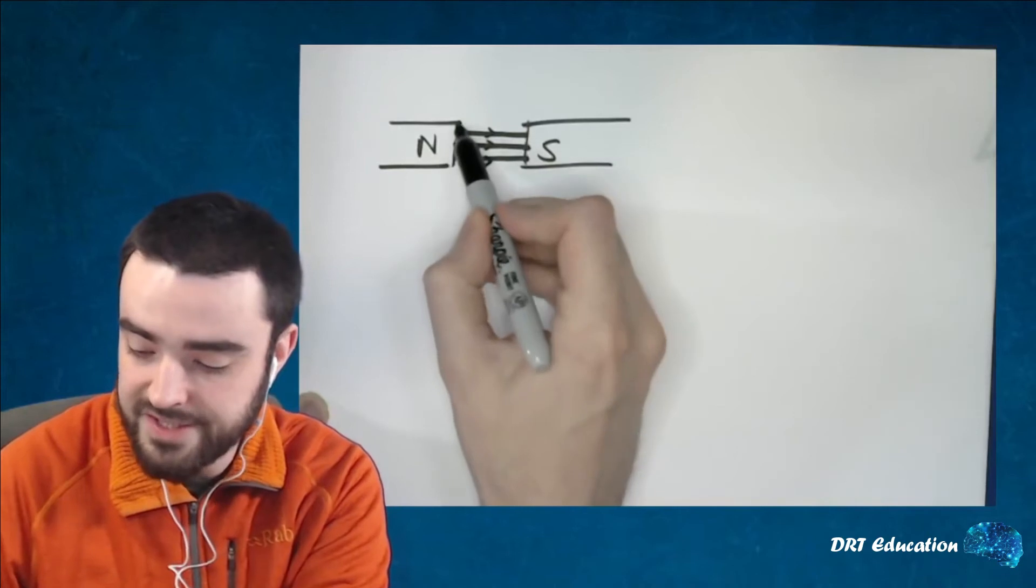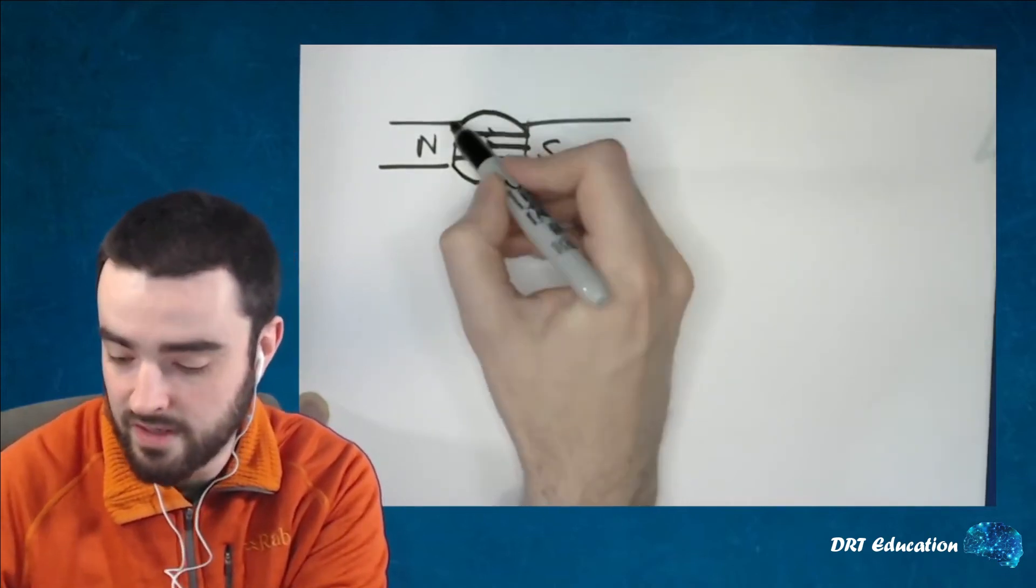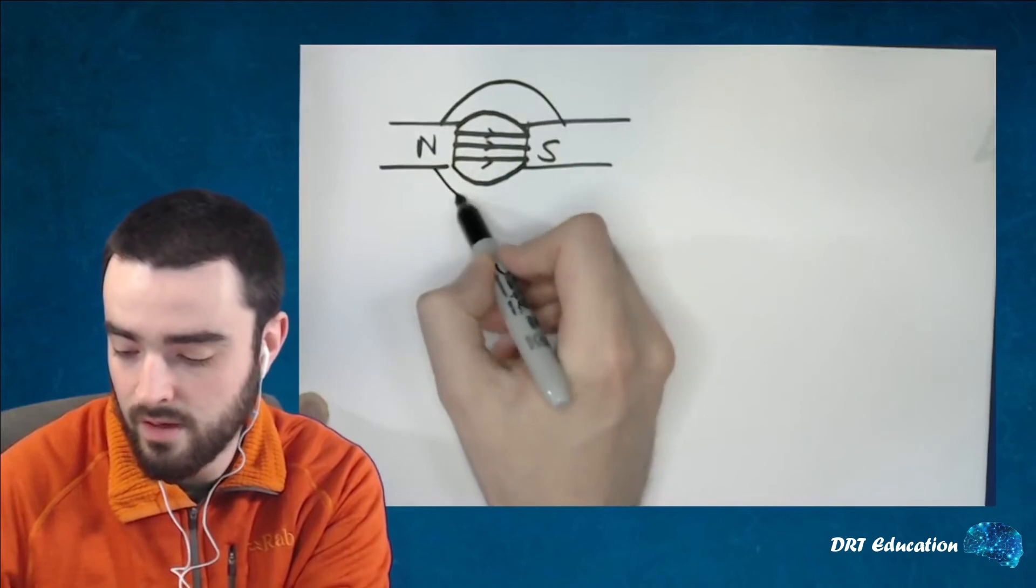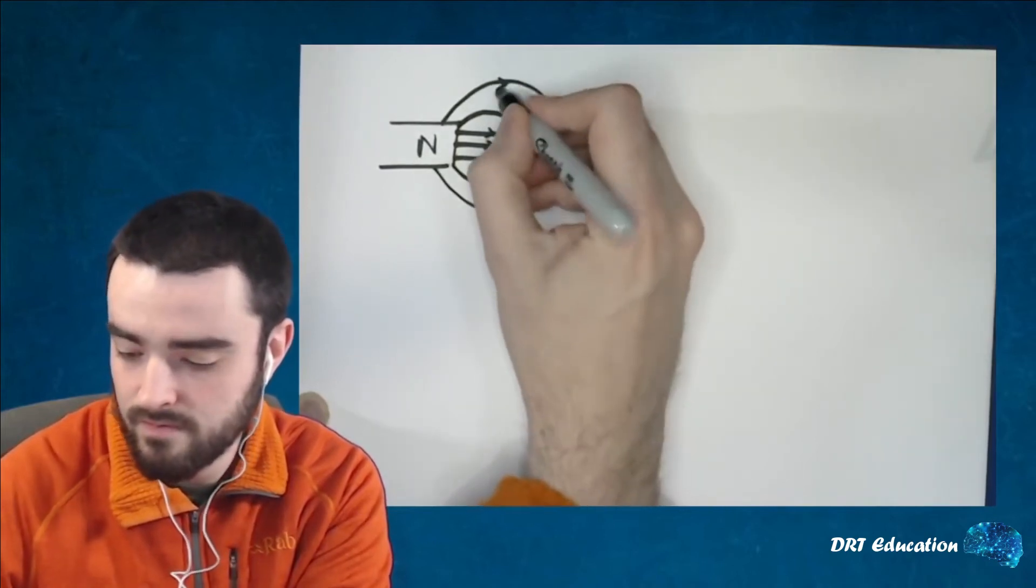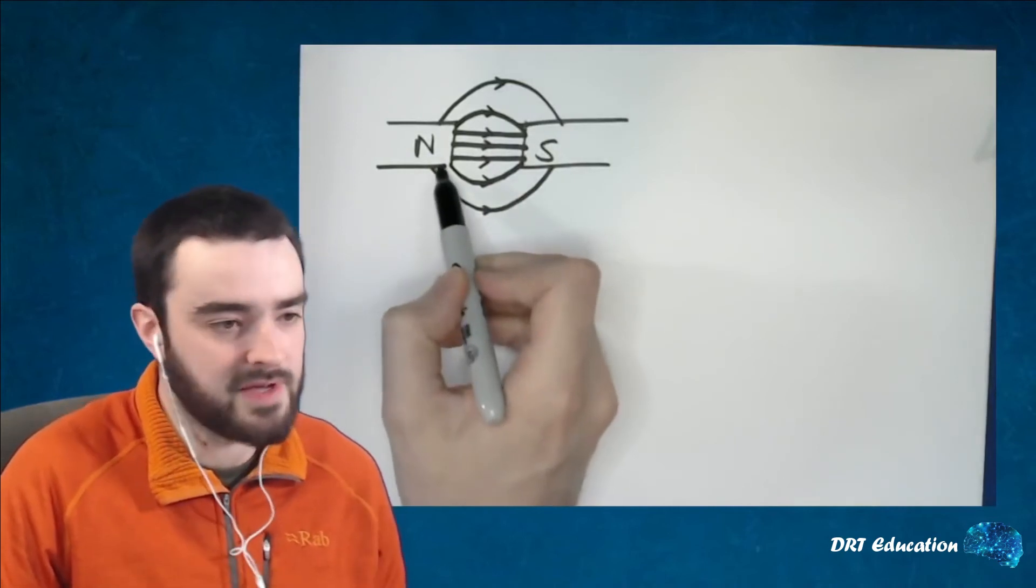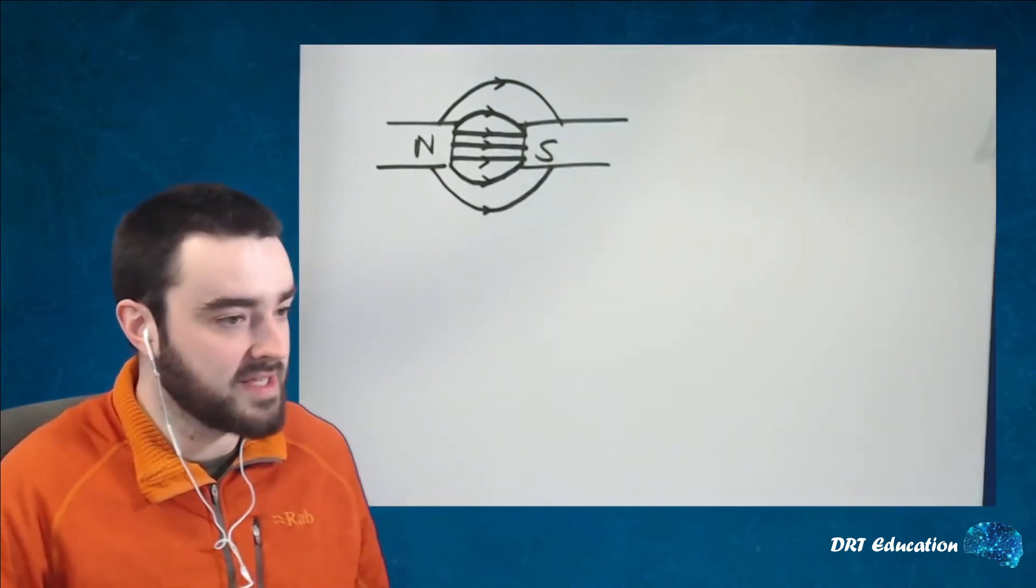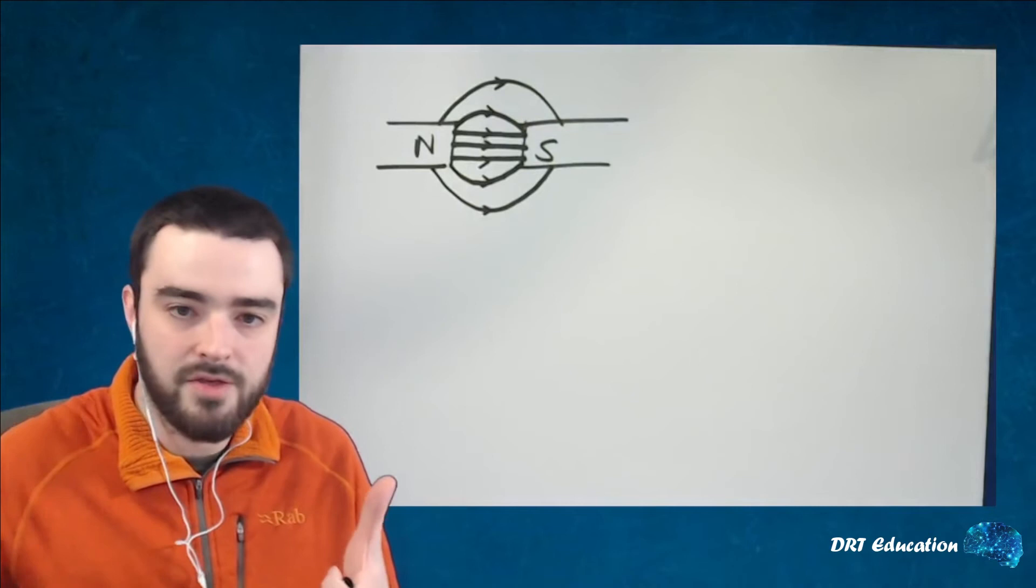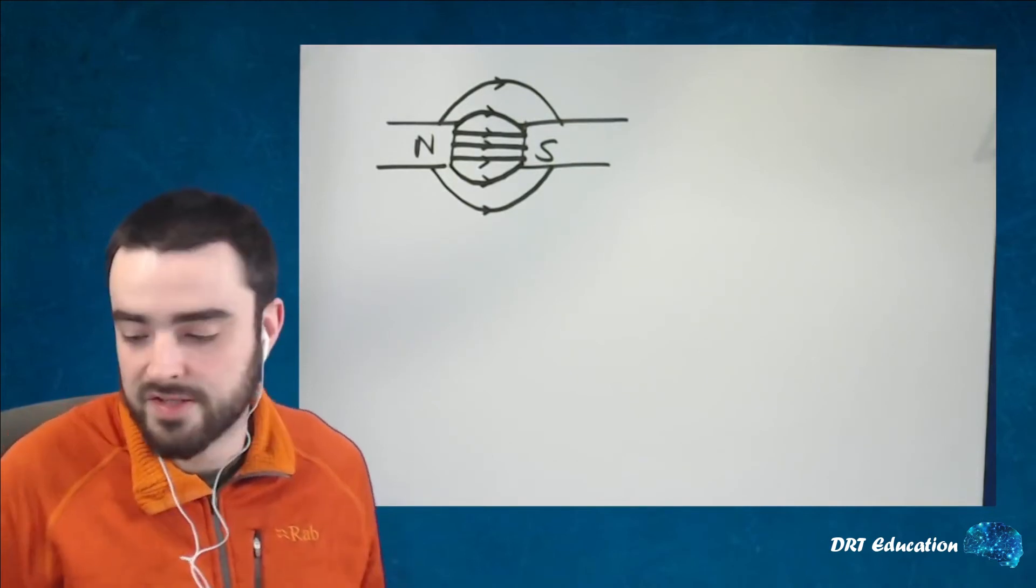And then at the edges, it's going to do something a bit like this. Note that not everything has to come out of the end, because actually the magnetic field is generated throughout and by each individual part of that magnet.